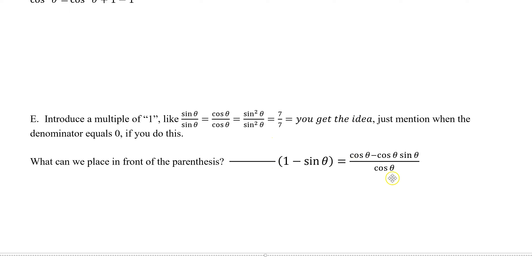If you look at this, we have 1 minus sine theta, and we want to make this. Well, our denominator is cosine theta. So if you introduce a cosine theta and a cosine theta, we now just introduced that denominator.